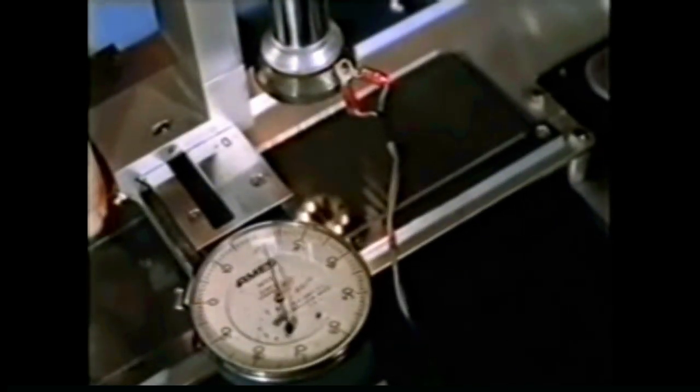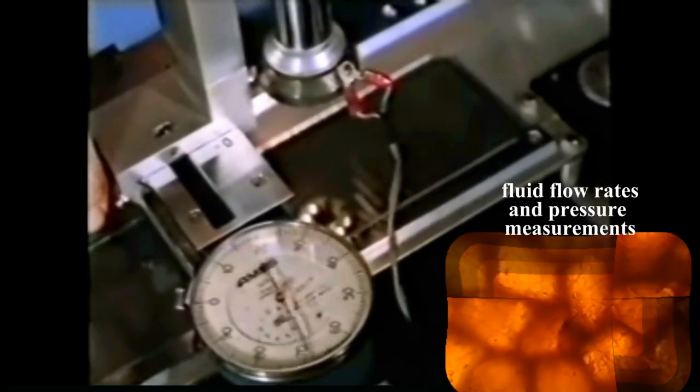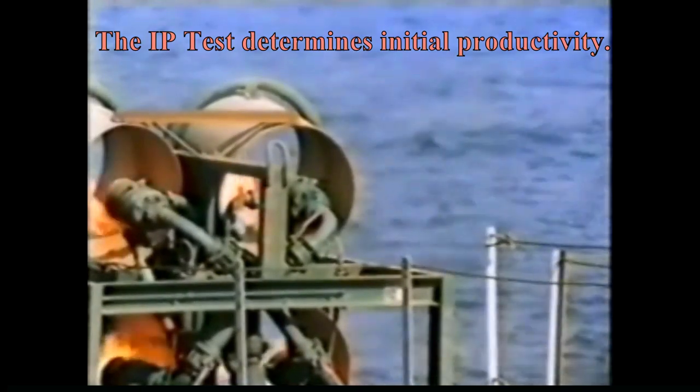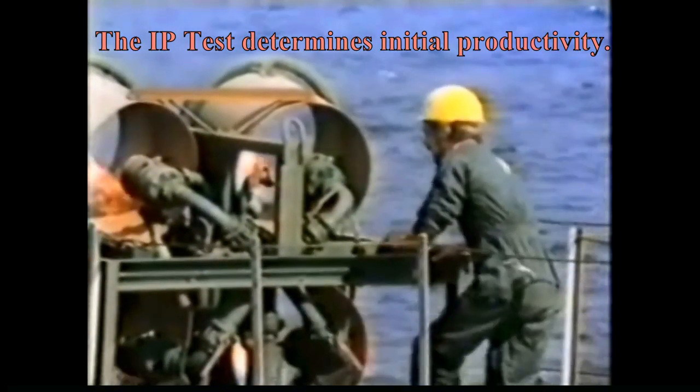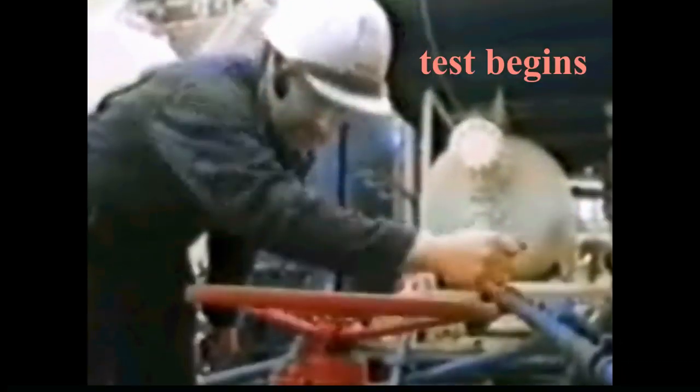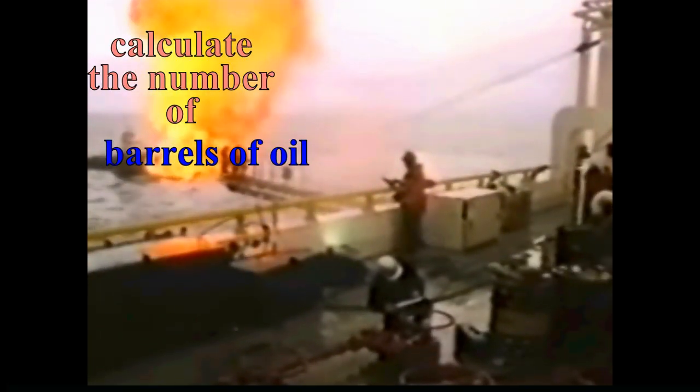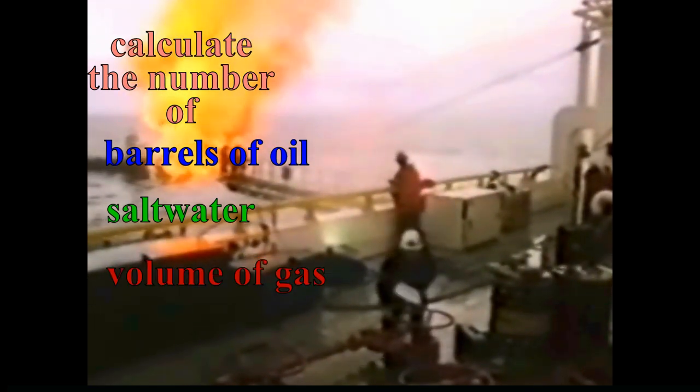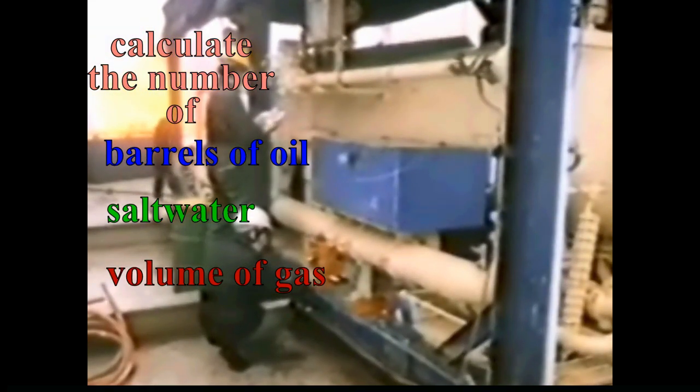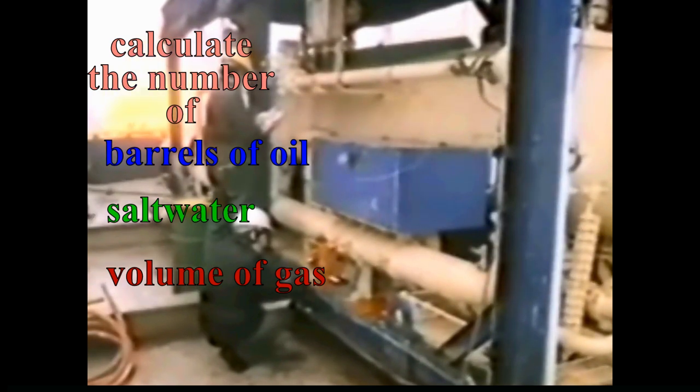This very important test allows reservoir fluid volume or flow rates and pressure measurements to be accurately determined. The initial potential test determines initial productivity and is done over a period of 24 to 36 hours to calculate the numbers of barrels of oil, of salt water, and the volume of gas that can be produced during this period.